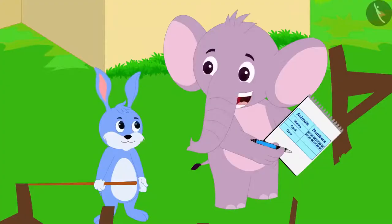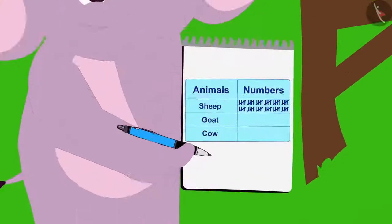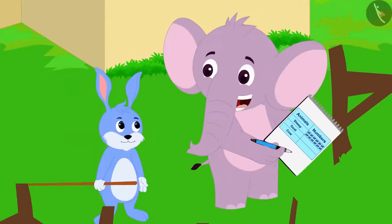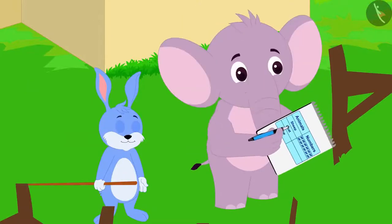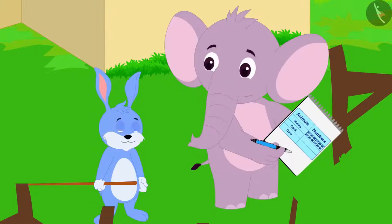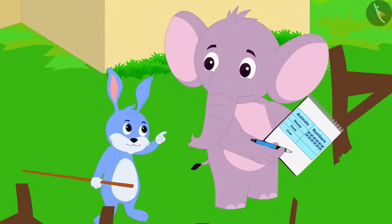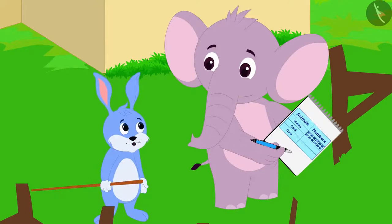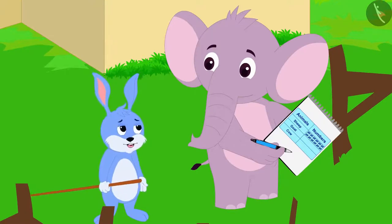Appu said, Bunny, I finished counting all my sheep very quickly. But now I see only groups of five tally marks. How will I know what the total number of sheep is? Bunny laughed and said, you just count these groups of five.